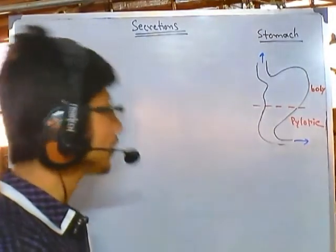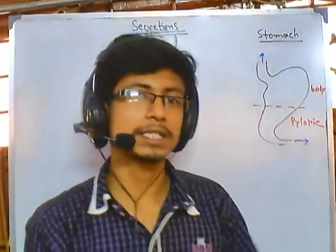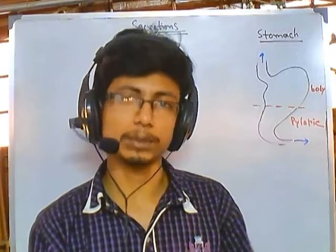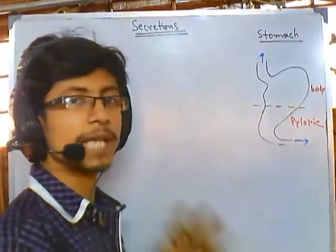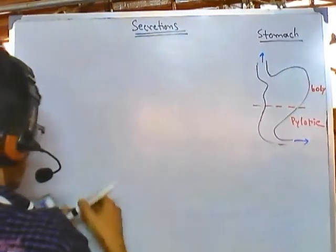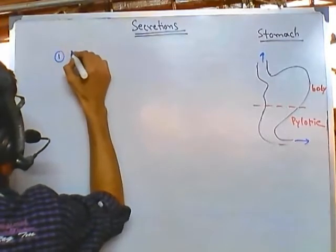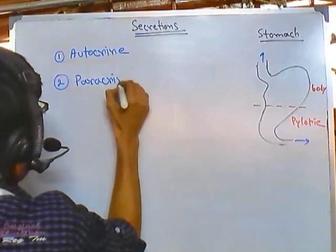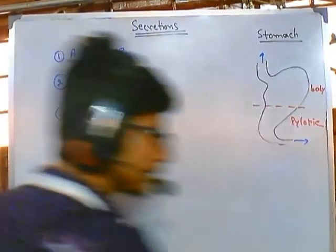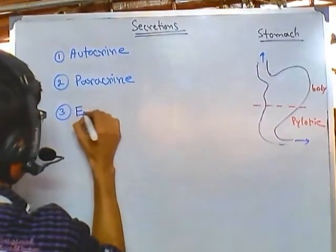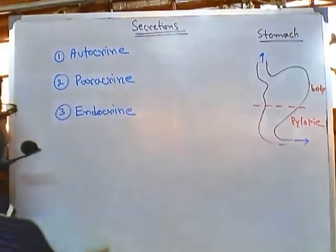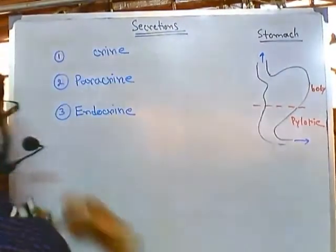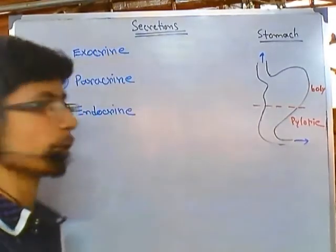The secretions we get from the stomach come from three different types of cells. In generalized biological terms, we know there are paracrine secretions, autocrine secretions, and endocrine secretions. In the stomach, we can find examples of all of these. To correct myself: we have exocrine secretion, paracrine secretion, and endocrine secretion — three types of secretion found in the stomach. We don't actually get autocrine here.